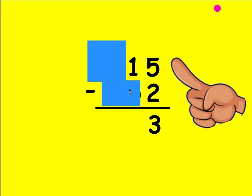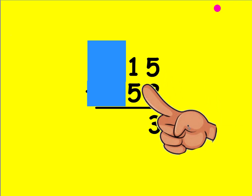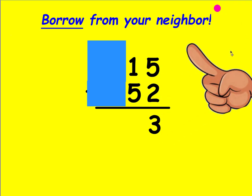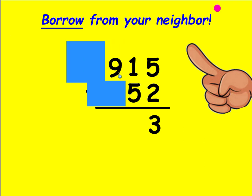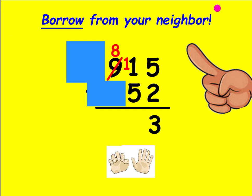Now move over and look at the tens place value. Is the top number bigger or equal? No, it is not. When it's not, you need to borrow from your neighbor. Go over to the hundreds place value — there's something to borrow. When you borrow, mark the number out and make it one less. Put the 1 in front of the number behind it — don't mark that out. Now count up from 5 to 11: 6, 7, 8, 9, 10, 11. It took you 6 fingers to get there.